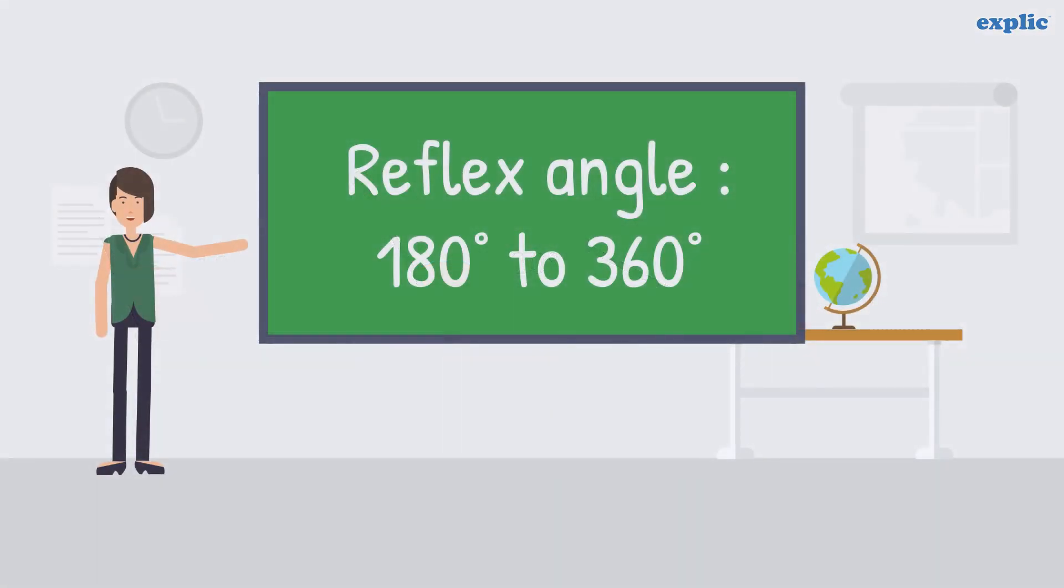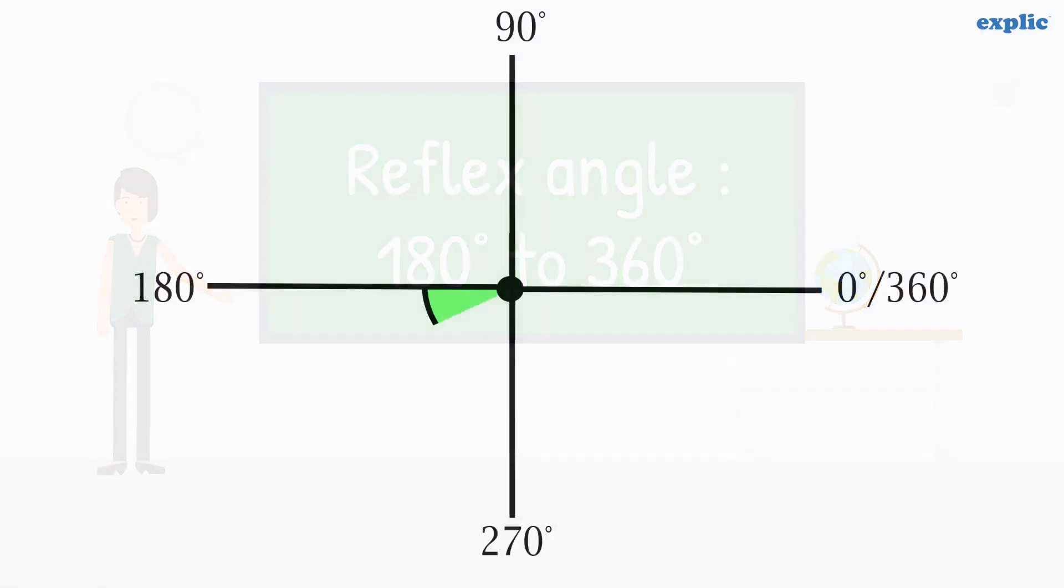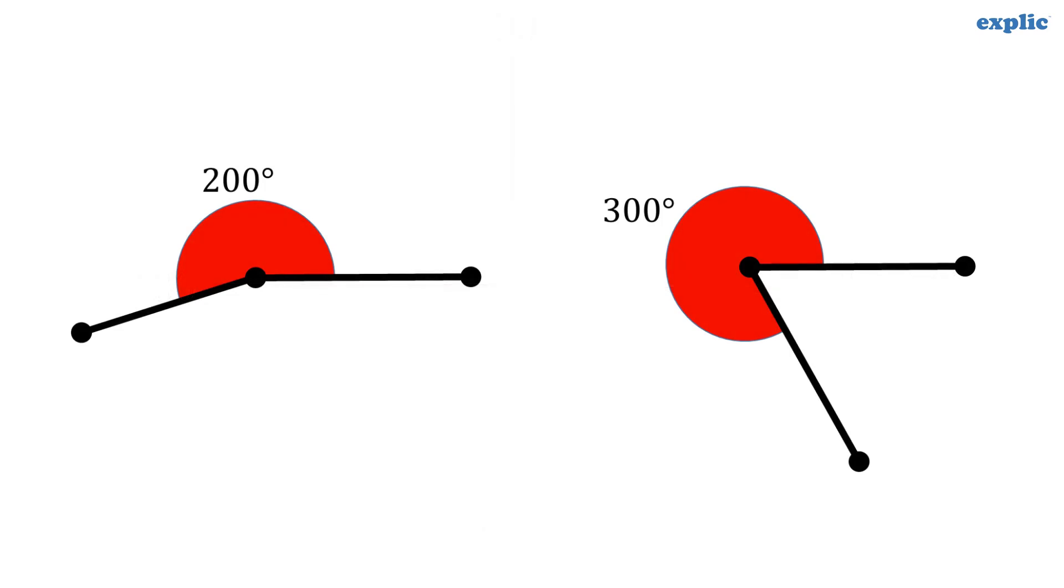A reflex angle is an angle between 180 degrees and 360 degrees, such as 200 degrees and 300 degrees.